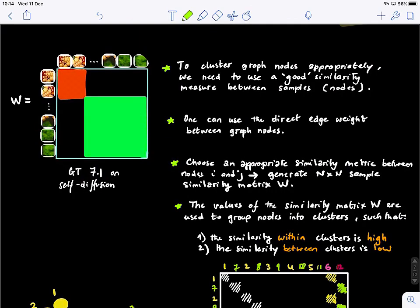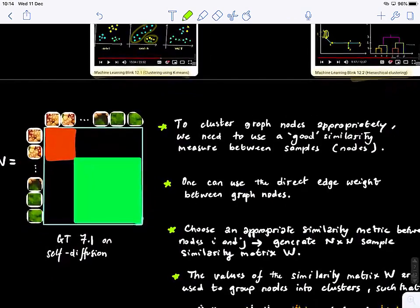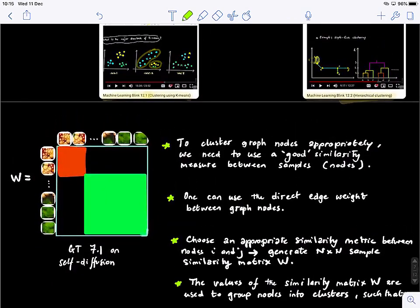Once we have clustered, if we look back at what we have done before, we have our adjacency matrix. When we did the self-diffusion, we wanted to cluster different patches of images together. And if we put them in the right order, you can see that we can easily see there are two clusters that appear here.